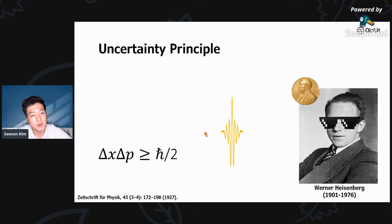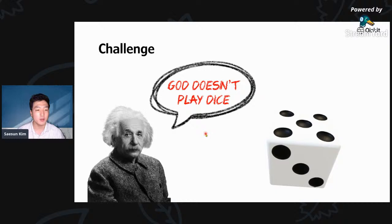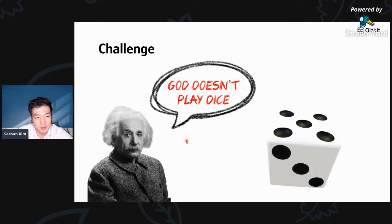The idea that quantum objects do not have a deterministic location — that we can only assign a location with a certain probability — made many physicists very uncomfortable. Einstein in particular was a strong critic of quantum mechanics. He knew quantum mechanics better than anyone at that time, and his own work had helped bring it into existence, but he did not want to accept this spooky reality. He worked hard to prove that quantum mechanics is incomplete, and he found what he thought was a significant error, which is called entanglement.